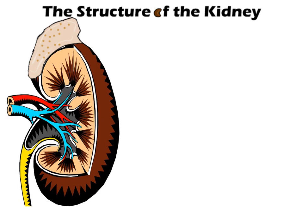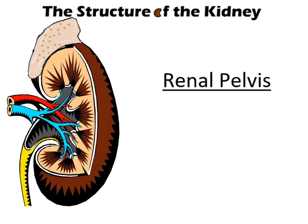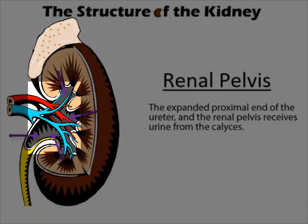The Structure of the Kidney. Renal Pelvis: the expanded proximal end of the ureter. The renal pelvis receives urine from the calyces.